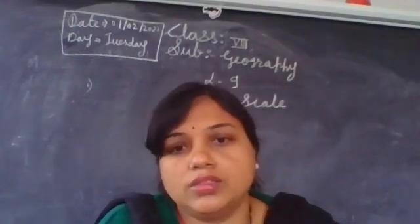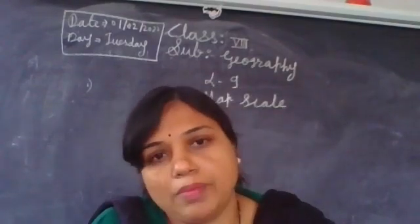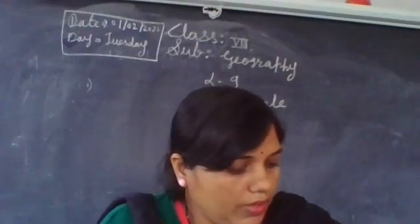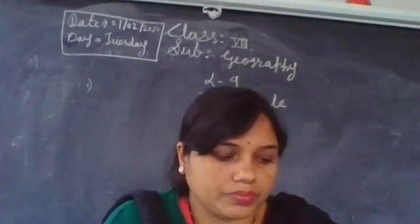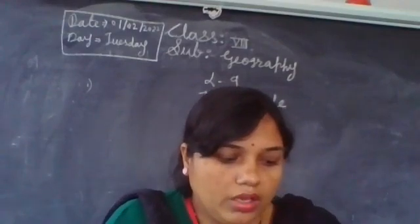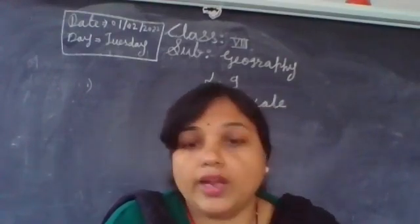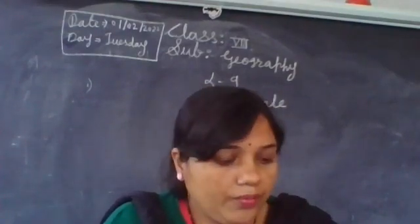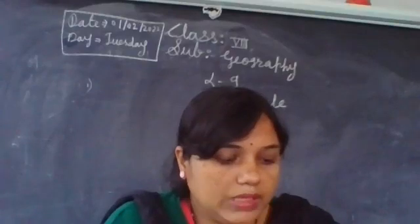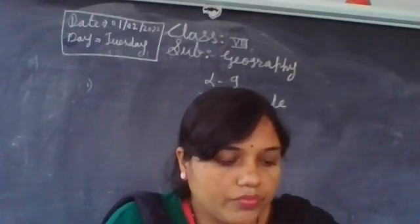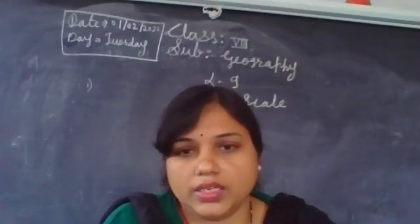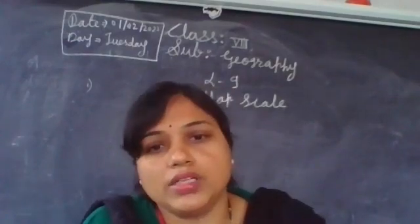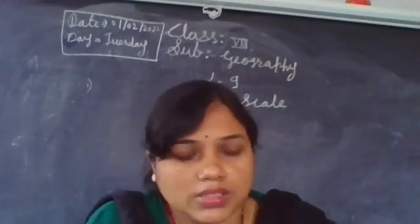First, we discussed the three kinds of maps. Then afterward, we discussed the meaning of the map scale, in which you know that there are three types of map scale: verbal scale, numerical scale, and linear scale. In the previous lecture, we understood this concept.